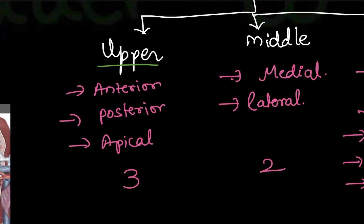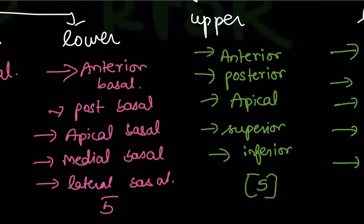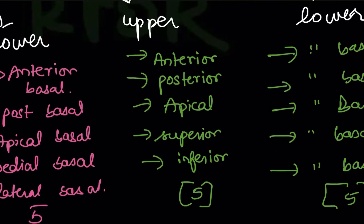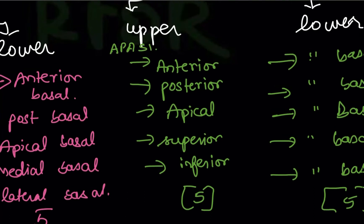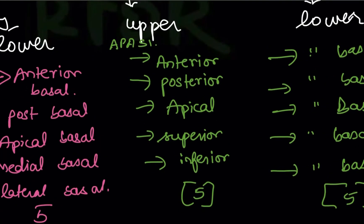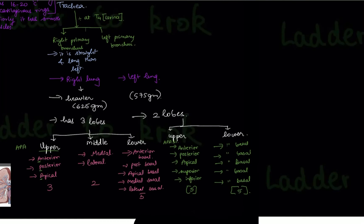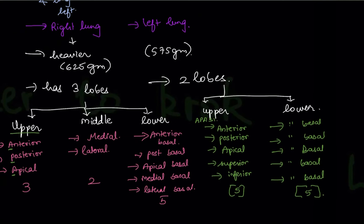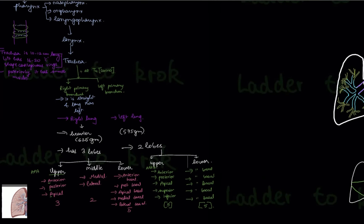To remember the upper lobe segments: use the mnemonic APPA — in Korean, 'appa' means dad. For the upper lobe of the right lung, remember APPA. For the upper lobe of the left lung, remember APPA-C, since in Korean you add 'see' to show respect. The middle lobe of the right lung is very important, so remember its two segments.